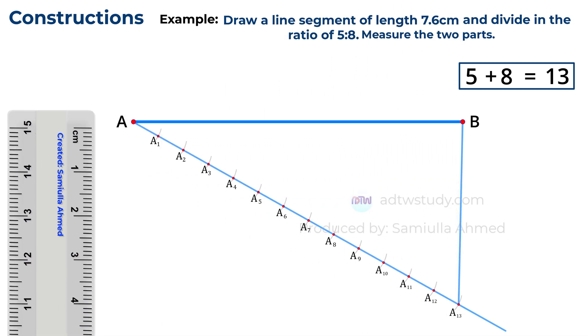After this, we need to draw a line from A5 such that it is parallel to A13B. To do this, take a compass, adjust it to any length, and with A13 as the center cut an arc as shown. Then without changing the length of the compass, place it at point A5 and cut another arc.